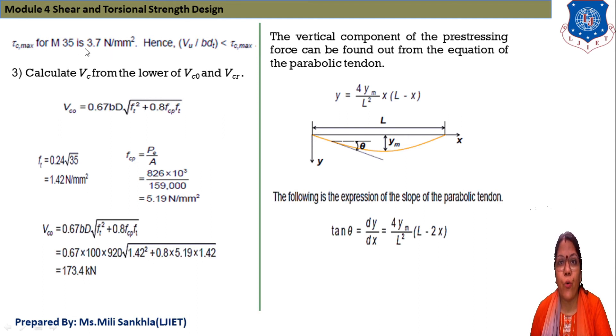Vu/(bw·dt) equals Vu 233.3 × 10³ because converting into Newtons, bw width of web into 876 and answer is 2.7 N/mm². τc max from M35 is 3.7 N/mm². This is given in IS 1343 table 5.1 for M35 grade of concrete. Calculate Vc from lower of Vco or Vcr. Vco equals 0.67bd√(ft² + 0.8fcp·ft).